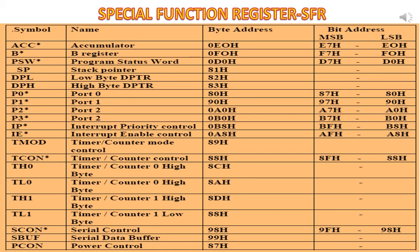IP and IE: IP is an interrupt priority control register. IE is an interrupt enable register. These two registers are used to control the interrupts inside the microcontroller 8051.